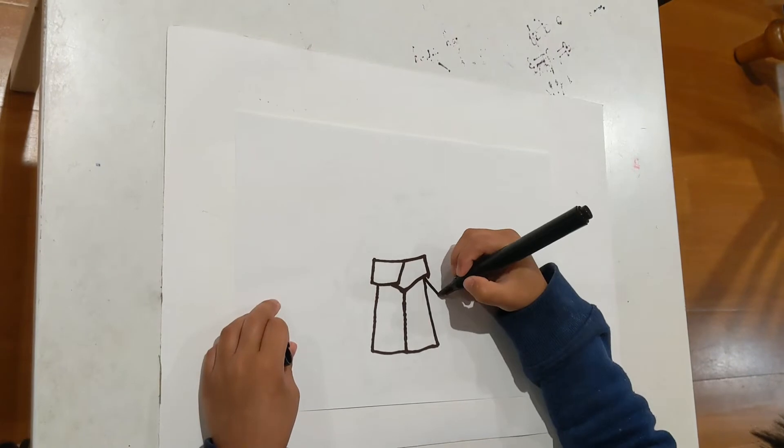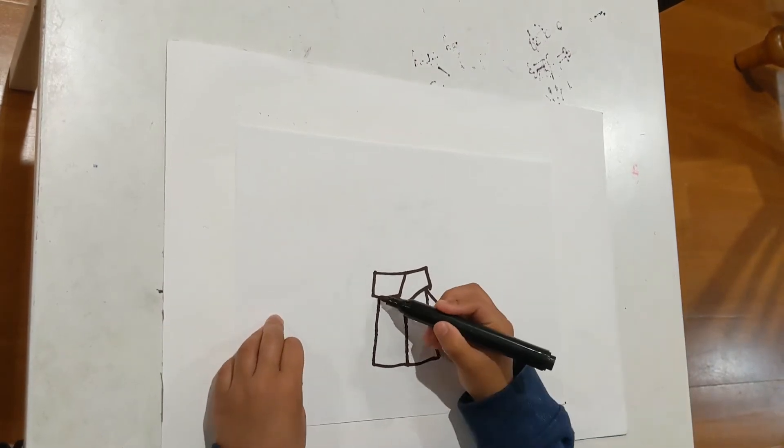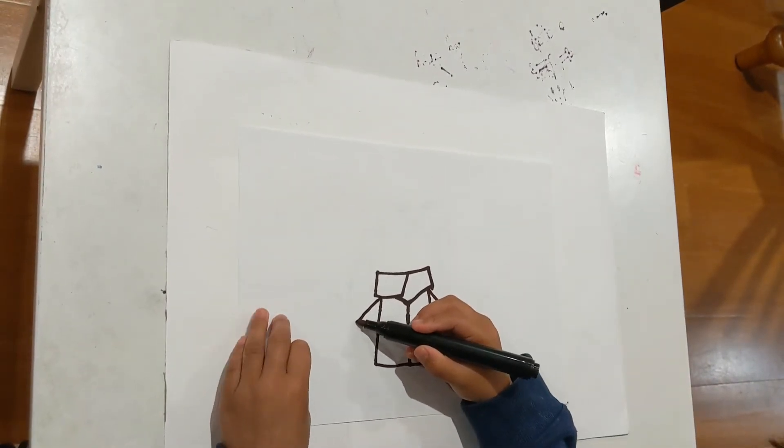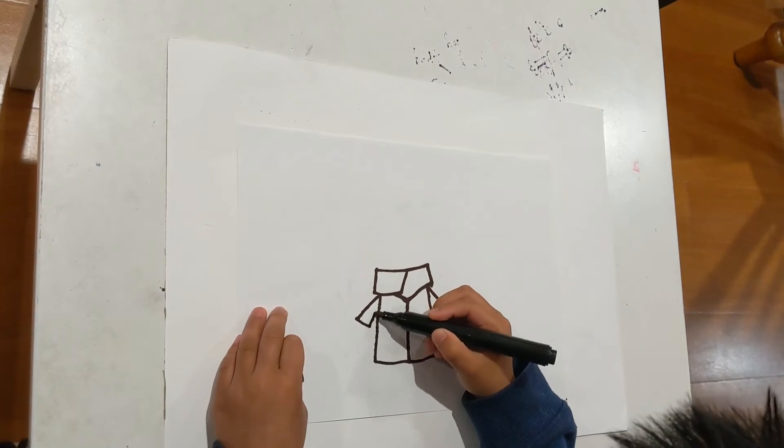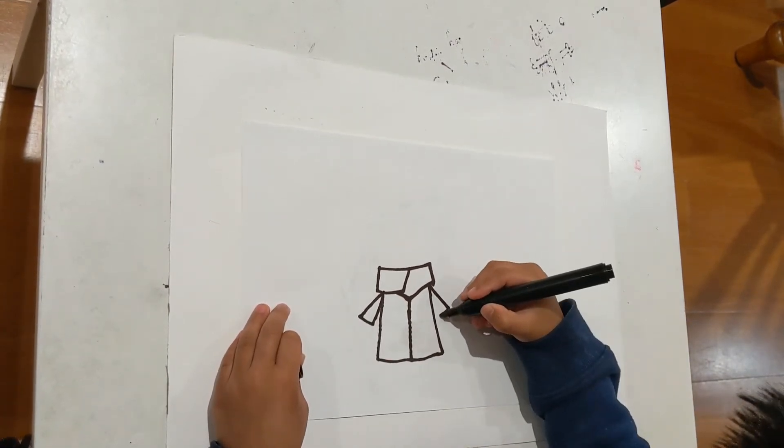Now let's draw the arms. A diagonal line out. Then another diagonal line out. In, up. In, up, up.